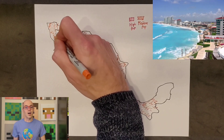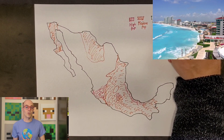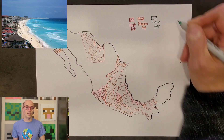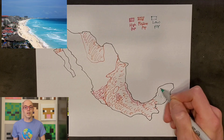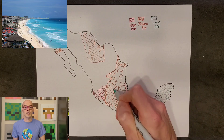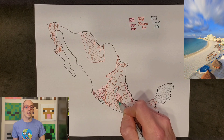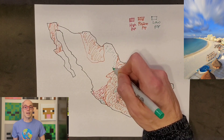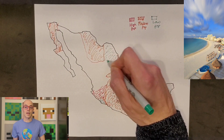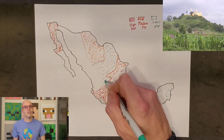Cancun, located on the Yucatan Peninsula, is Mexico's top tourist destination, renowned for its white sandy beaches and turquoise waters. Visitors to Cancun can enjoy a variety of activities including snorkeling, diving, and exploring ancient Mayan ruins.